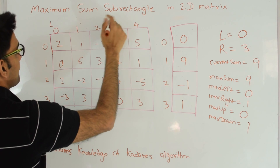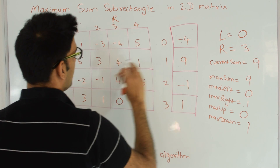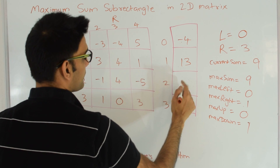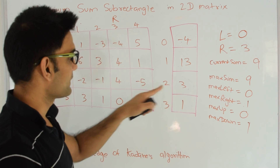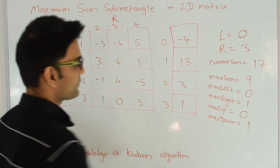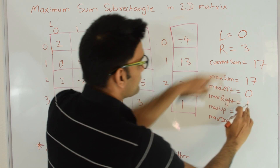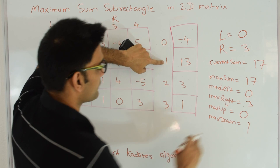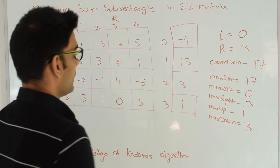We increment right to 3. We add column 3: 0+(-4)=-4, 9+4=13, -1+4=3, 1+0=1. Applying Kadane's algorithm: 13+3=16, 16+1=17. Current sum becomes 17, which is greater than max sum 9. Max sum becomes 17. Max left=0, max right=3, max up=1, max down=3.